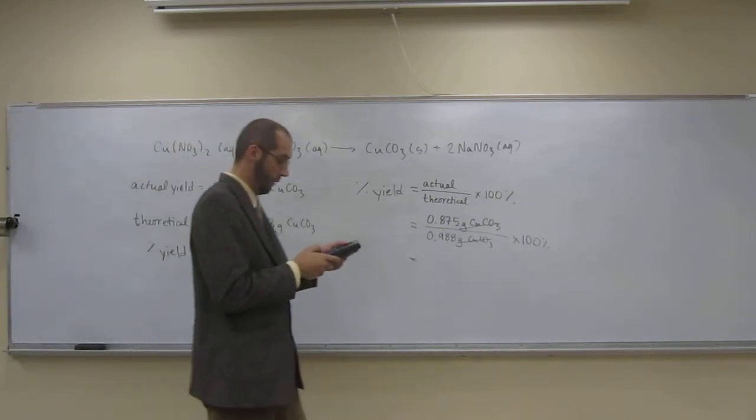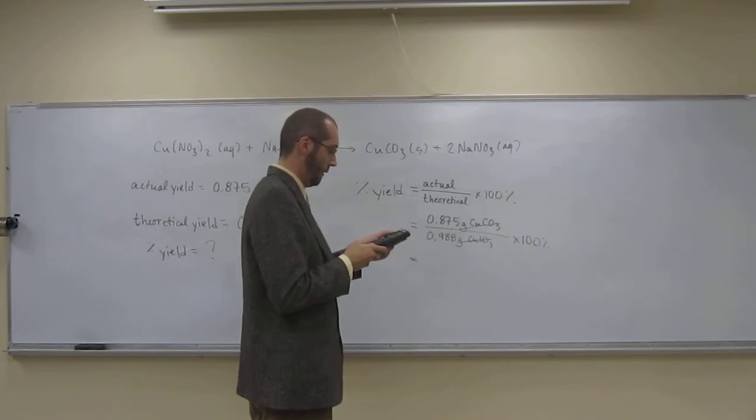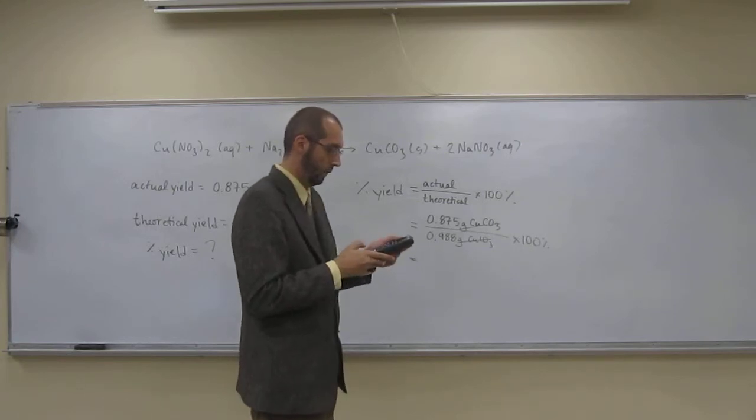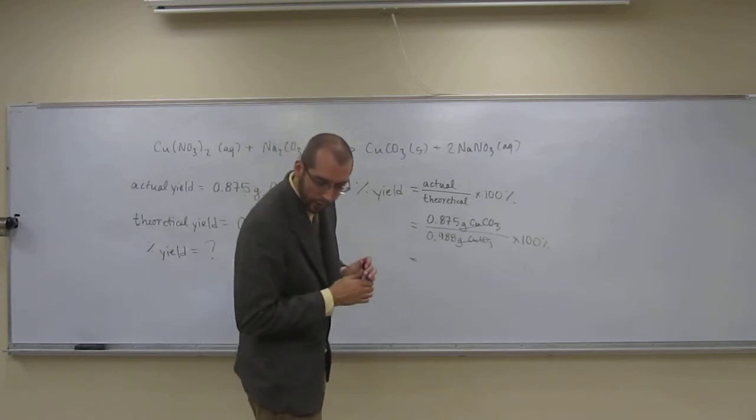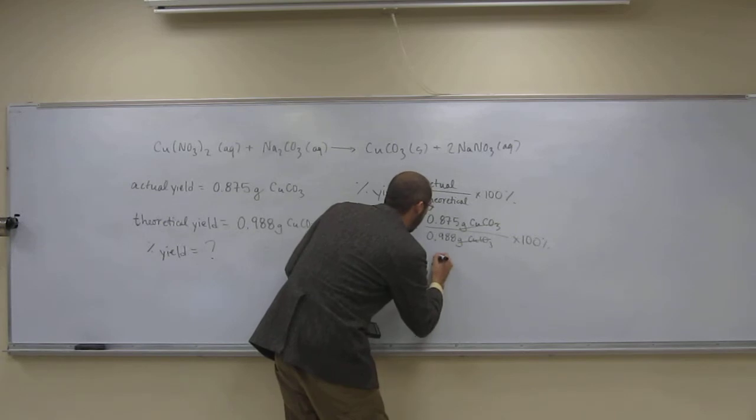So, 0.875 divided by 0.988. And to three sig figs, it's going to be 88.5%.